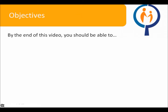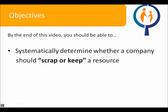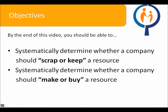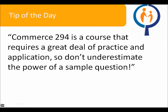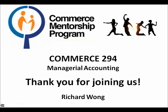This concludes the first part of our online tutorial on relevant decision-making. Let's review our objectives for today. By now, you should be able to systematically determine whether a company should scrap or keep a resource, and systematically determine whether a company should make or buy a resource. If you are unable to complete any of these objectives, now is a good time to re-watch this video or complete more exercises. Remember that Commerce 294 requires a great deal of practice and application, so don't underestimate the power of a sample question. For additional problems, please visit us at cmp.cusonline.ca. If you have any additional questions, please consult your professors or teaching assistants. Thank you.